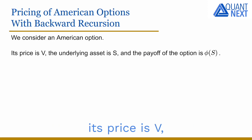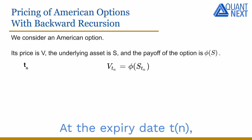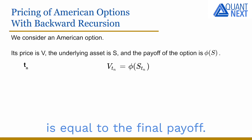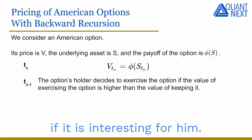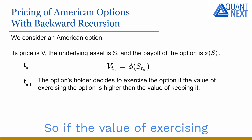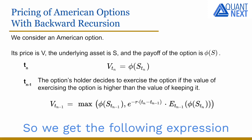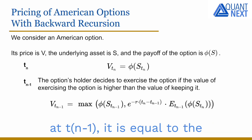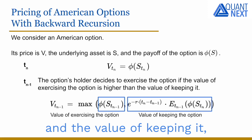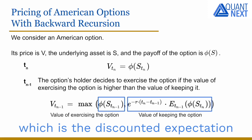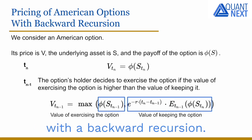We consider an American option: its price is V, the underlying asset price is S, and the payoff of the option is Phi of S. At the expiry date Tn, the price of the American option is equal to the final payoff. At the previous date, the option holder will decide to exercise the option if it is interesting for him — that is, if the value of exercising is higher than the value of keeping it. So we get the following expression for the price of the American option at Tn-1: it is equal to the maximum between the value of exercising the option at Tn-1 and the value of keeping it, which is the discounted expectation of the value of the American option at the next date. So we see that we can easily calculate the price of the option with a backward recursion.